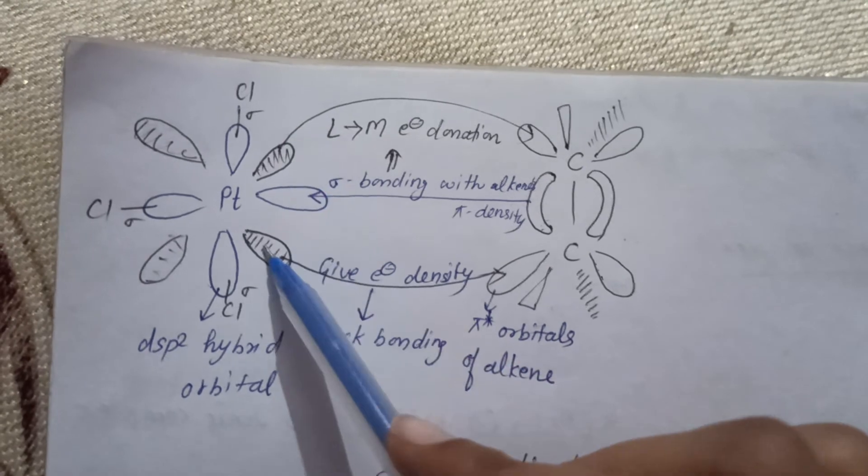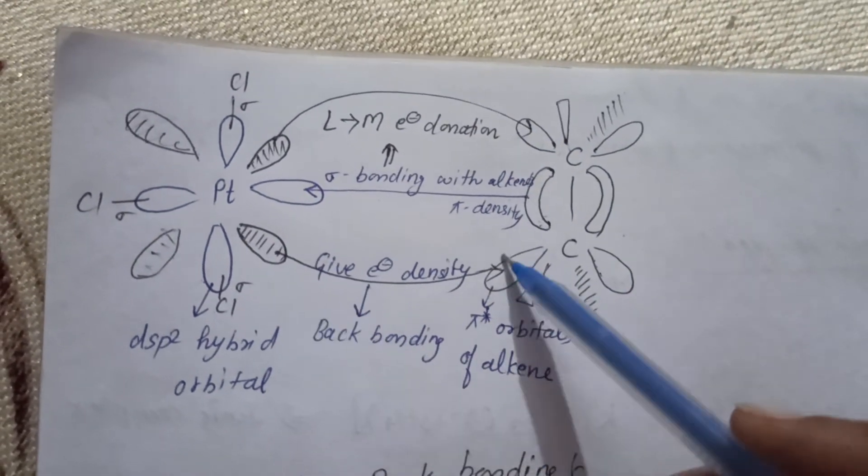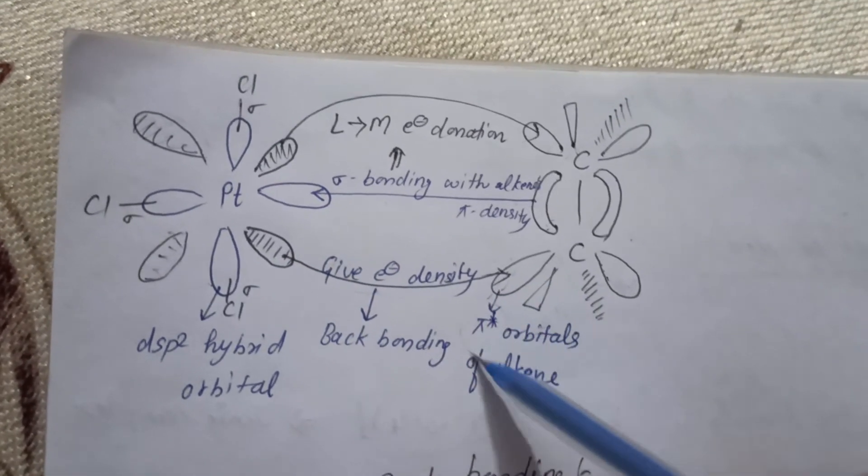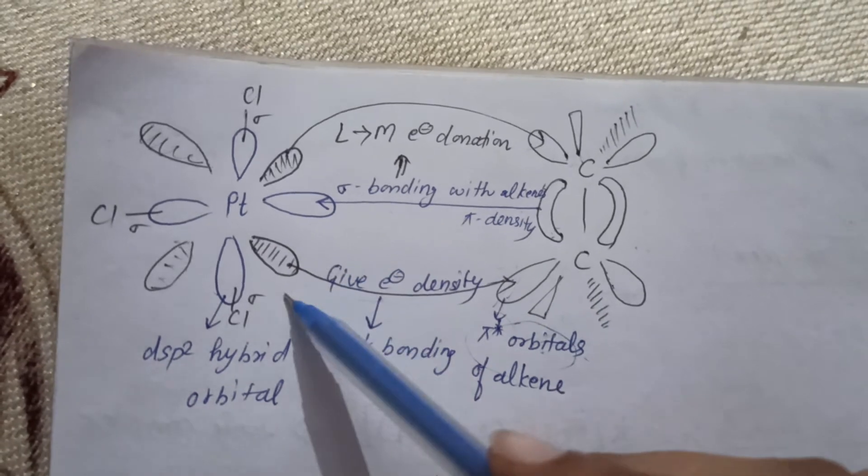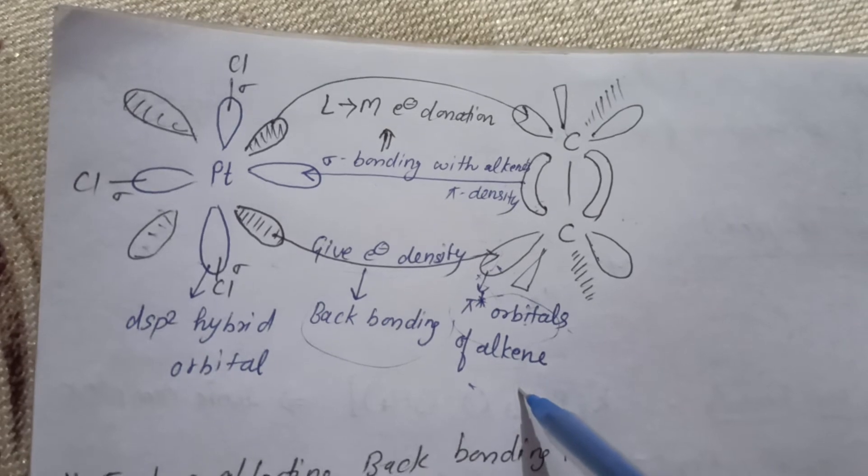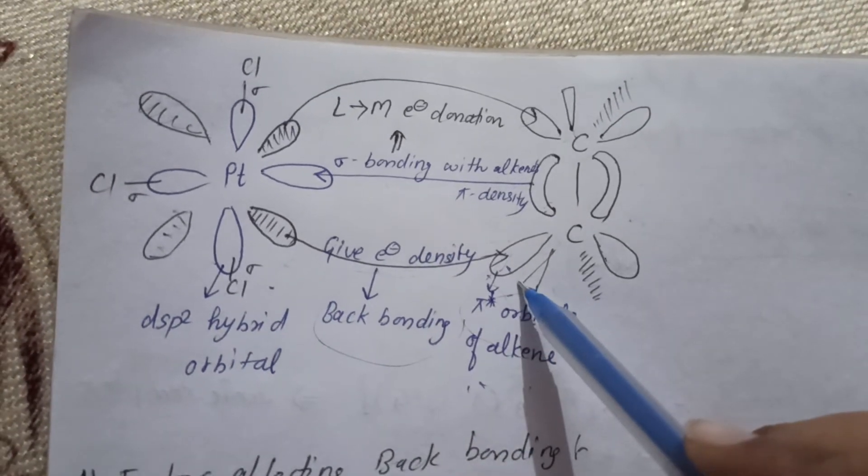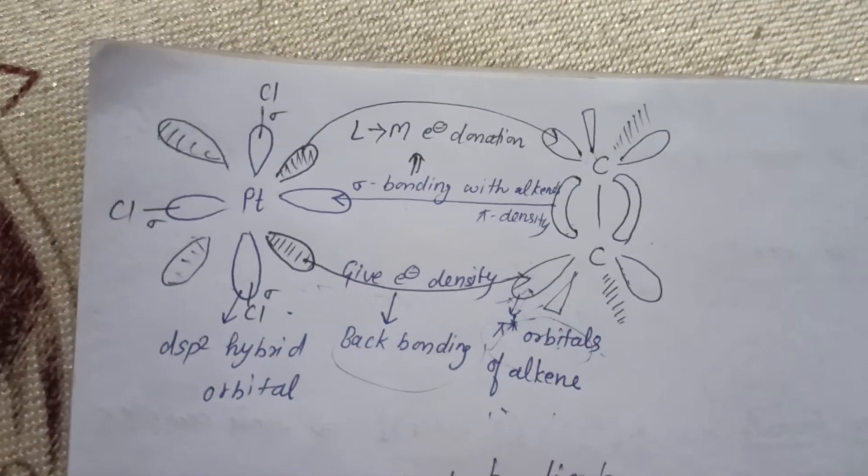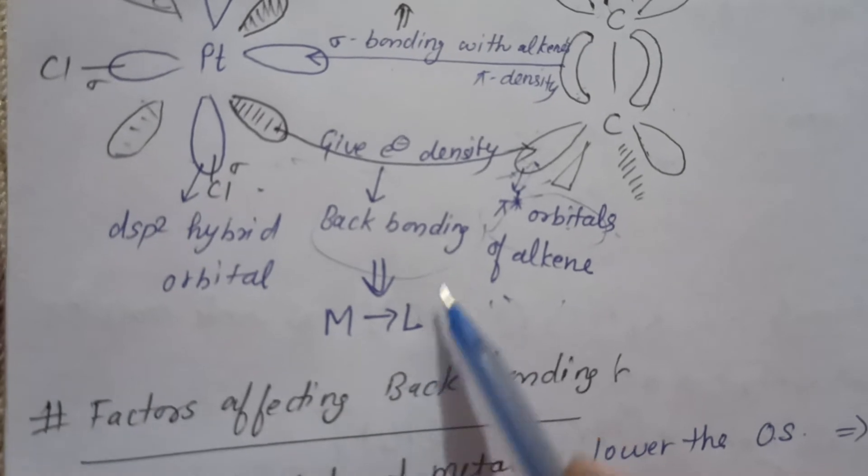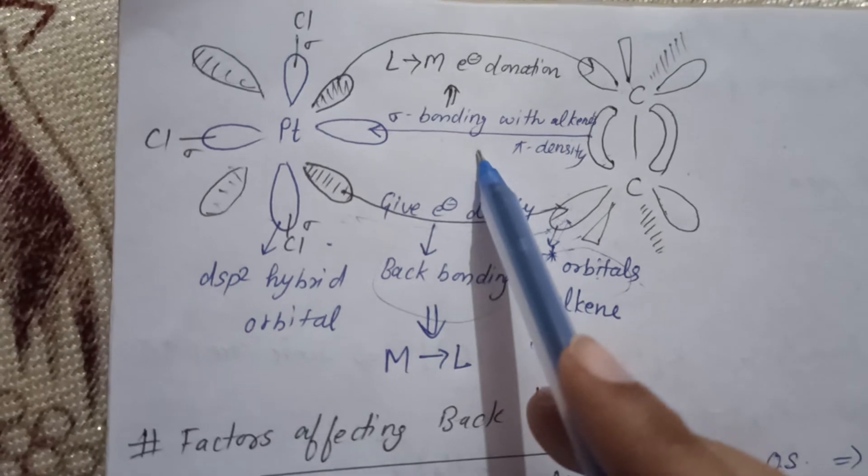Now we have unhybridized orbitals. What will we do here? We will show back bonding. We will give electron density. These are pi star orbitals. We will give electron density. This is the back bonding of alkyne. The electron density is given to the ligand. I have written here that from the ligand is back bonding and from the ligand is electron donation. This is sigma bonding.